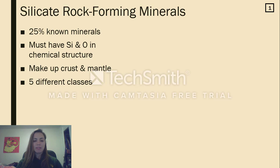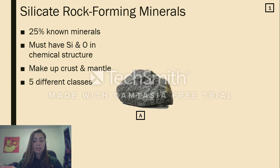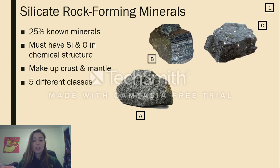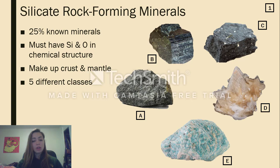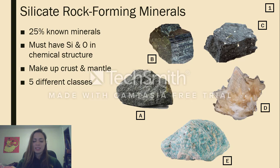Silicates can be classified into five different classes shown here. First, there's the olivines, then the pyroxenes, amphiboles, micas, and the feldspars. We'll go into detail about each different group, but first let's talk about what makes a silicate a silicate.